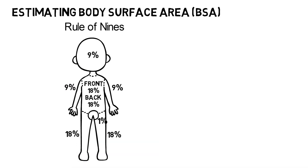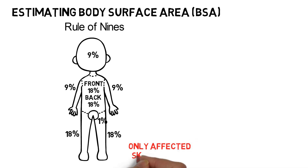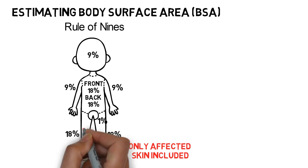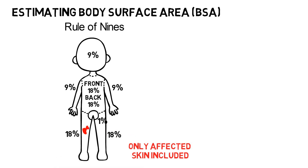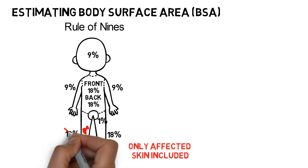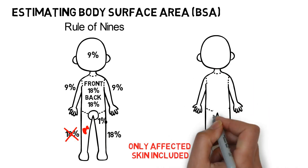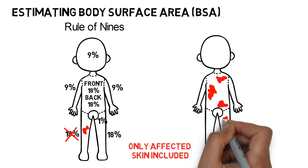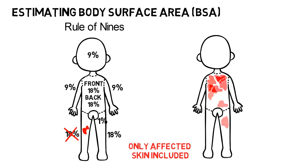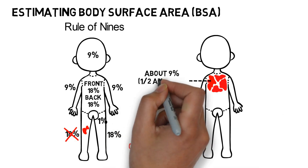It's important to note that only the affected skin should be included in the BSA calculation, not the whole area. For example, if a small area of the leg is affected, this does not mean that the BSA is 18%. To accurately calculate BSA, you need to imagine the areas of rash grouped together before applying the Rule of Nines.